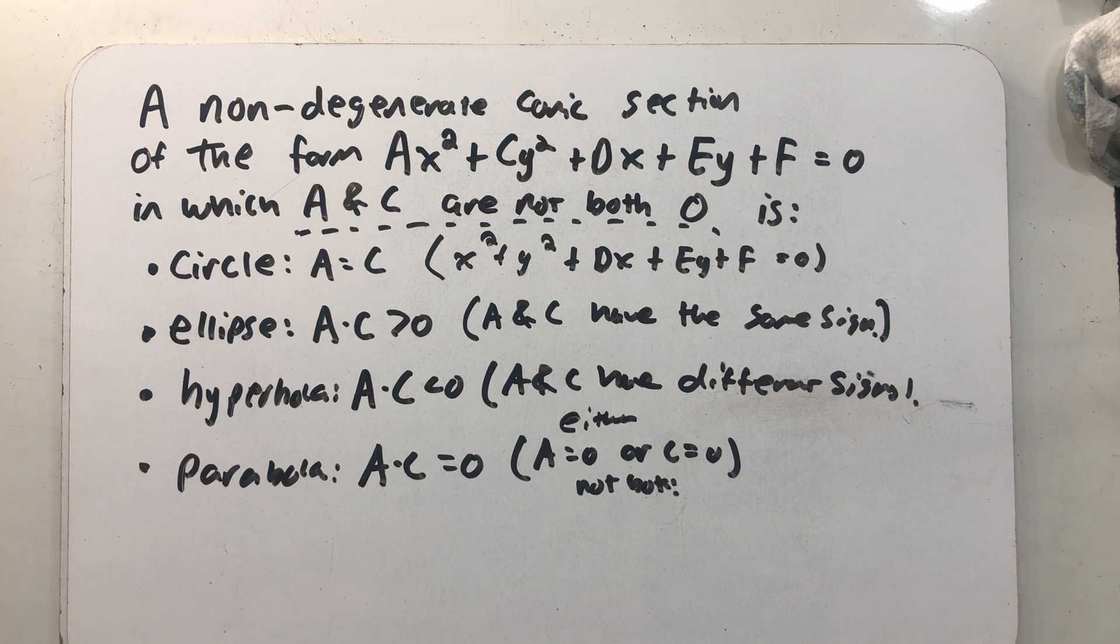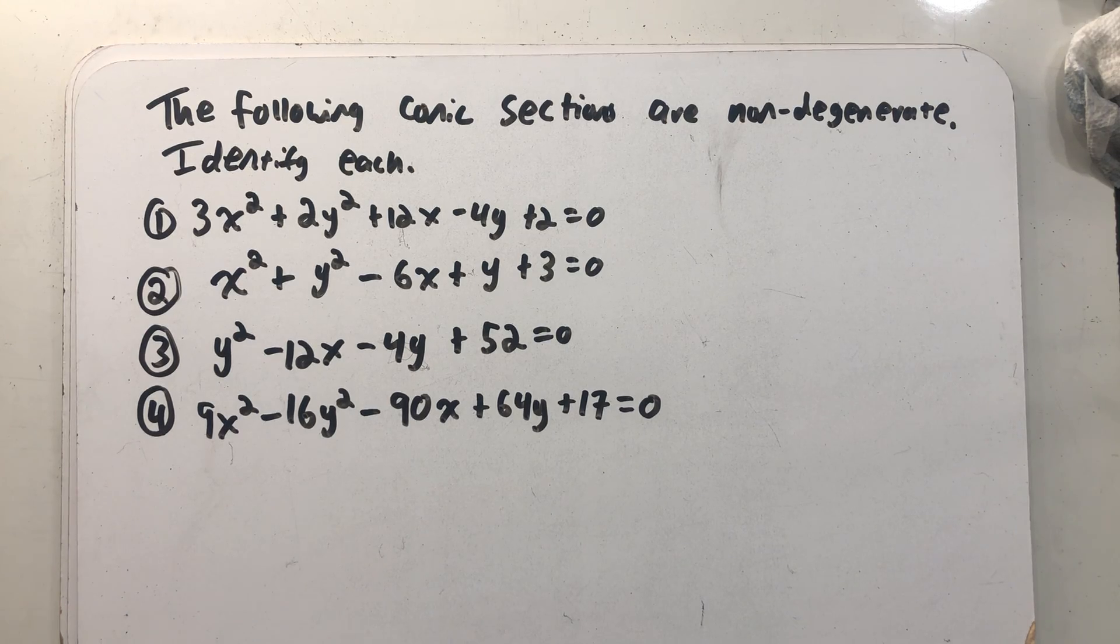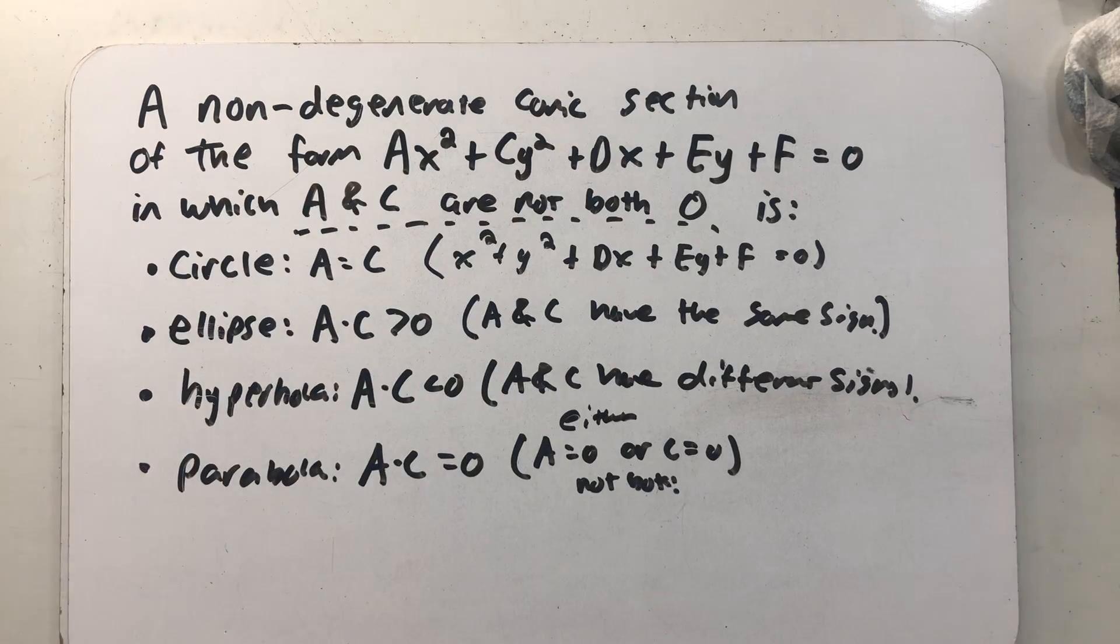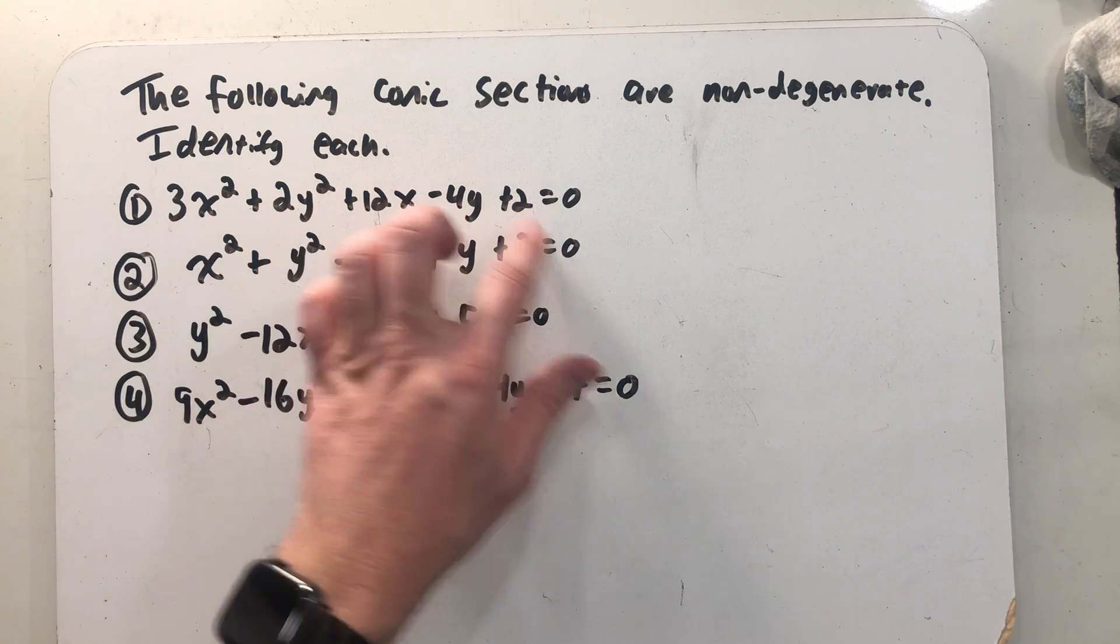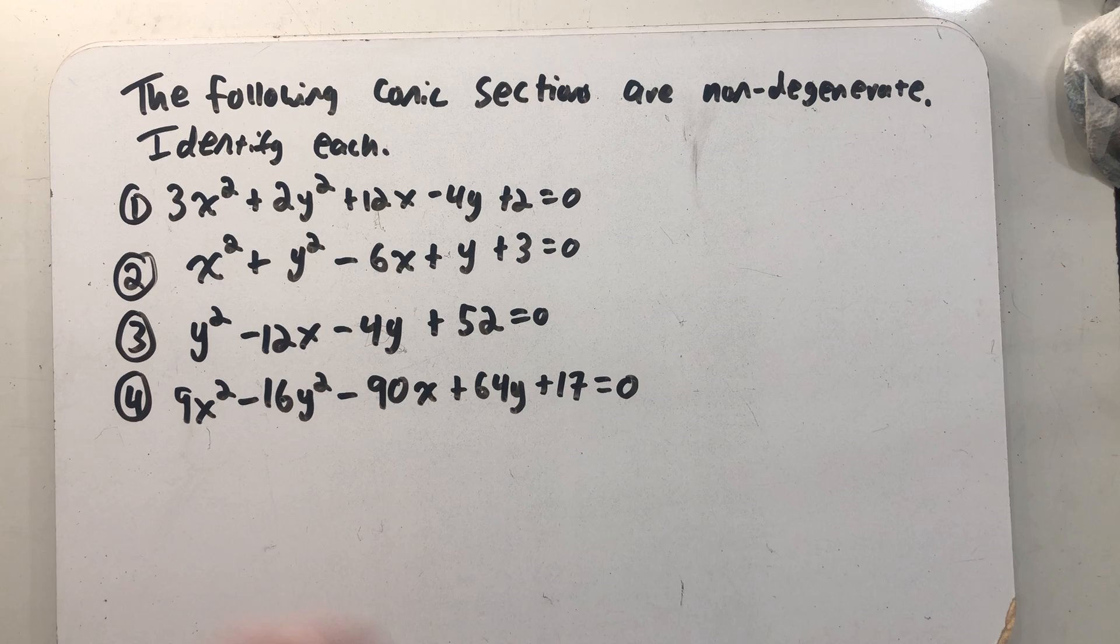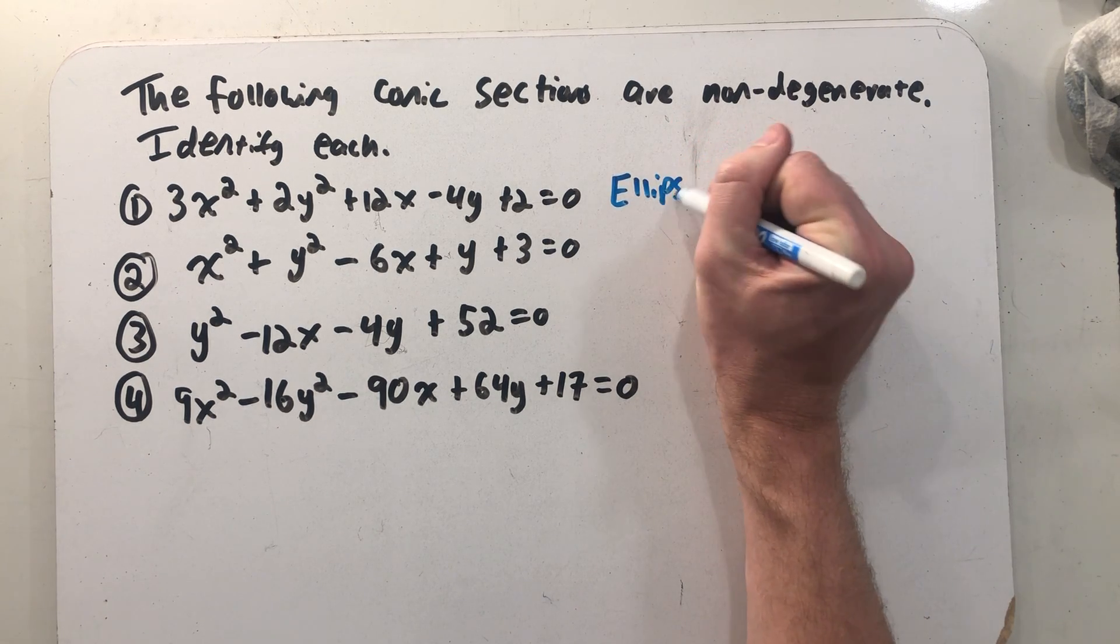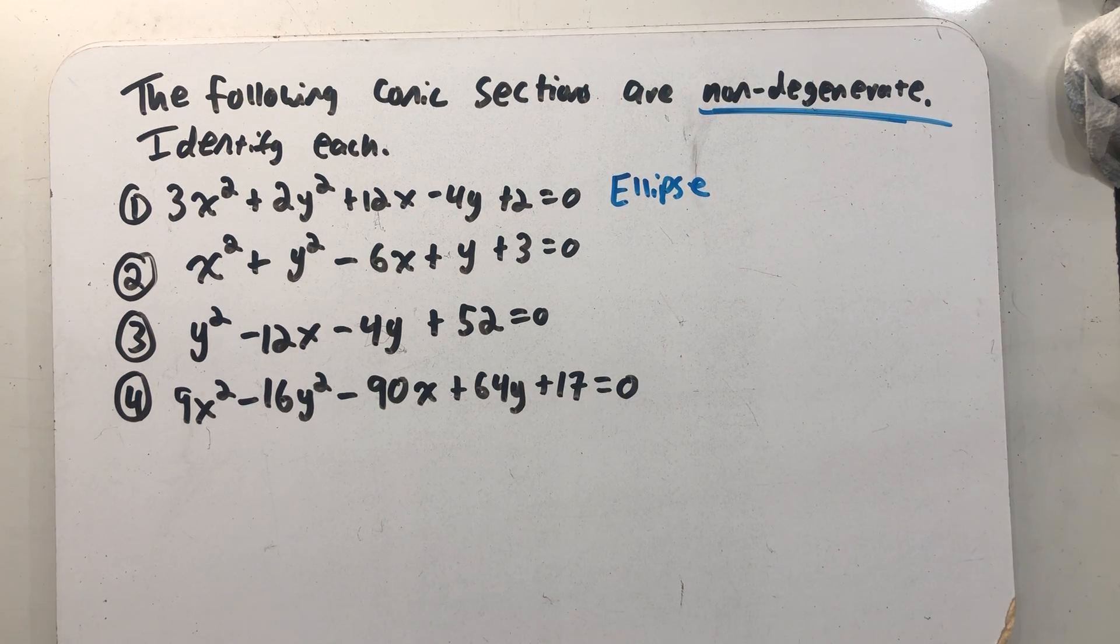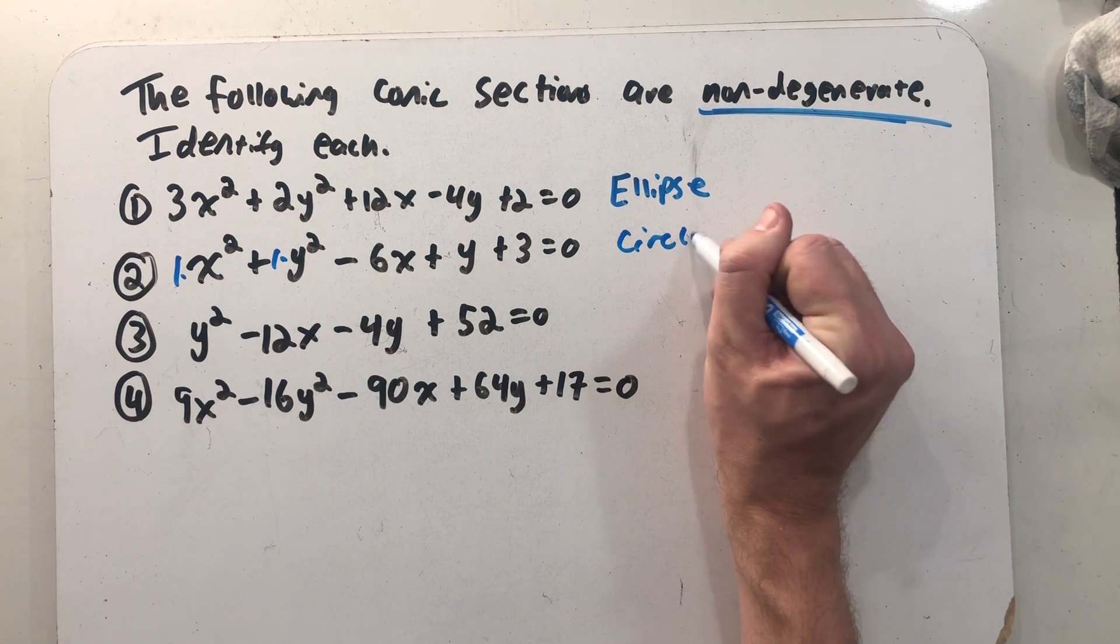All right. So here, I have four conic sections. And we've been asked to identify them under the promise that none of them are degenerate. So these four rules are all we need to know. And number one here, I'm looking at this, I see a, c, d, e, and f. Just looking at a and c, they have the same sign but are not equal. So that has to be the equation of an ellipse, as long as we're promised that. X squared and y squared are both positive. The thing in front of each is one. That means that has to be the equation of a circle.